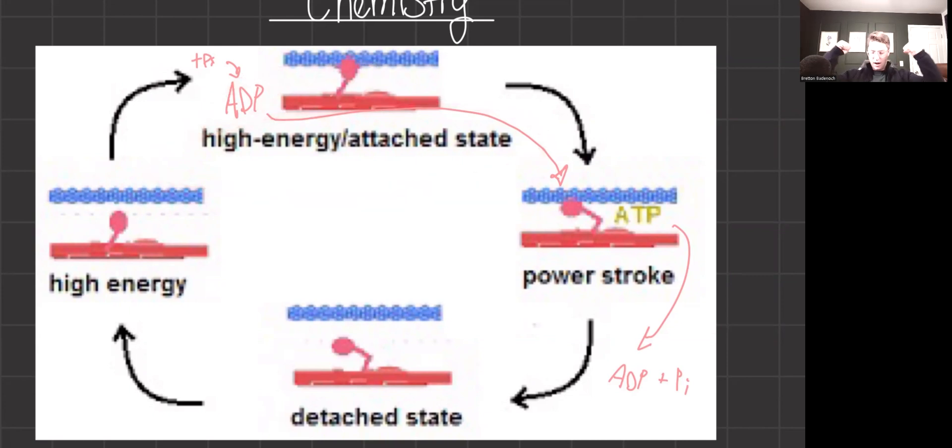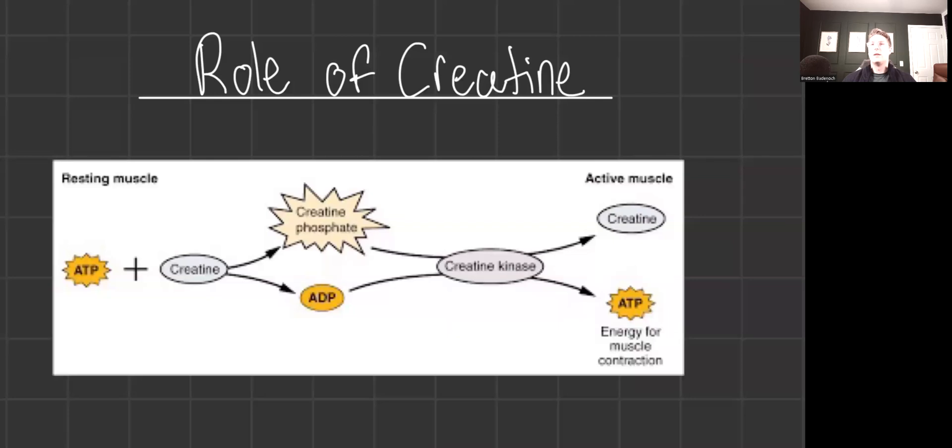Now let's talk about creatine, something important for the MCAT and important as future medical professionals, because people are going to ask you about creatine. Creatine or creatine phosphate plays a critical role in quickly regenerating ATP from ADP, ensuring a steady supply of energy for muscle contractions. When ATP levels drop, creatine phosphate donates a phosphate group to ADP, forming new ATP molecules.